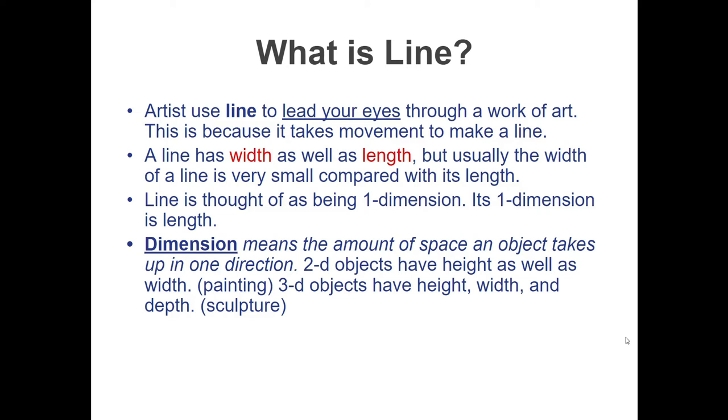A line has width and length, but usually the width of the line is very small compared to the length. A line is thought of as being one-dimensional, mostly because of its length. Dimension means the amount of space an object takes up in one direction.